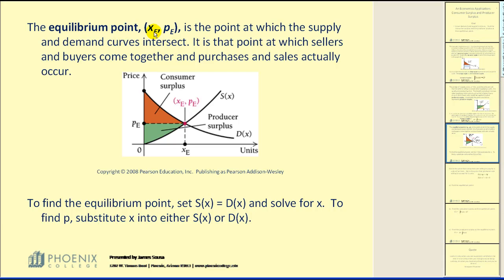The equilibrium point, (x, p), is the point at which the supply and demand curves intersect. It is the point at which sellers and buyers come together and purchases and sales actually occur. To find the equilibrium point, we set the supply and demand functions equal to each other and solve for x. To find the price p, we substitute x into either the supply or demand function since we are finding the point of intersection.